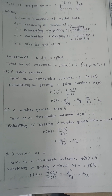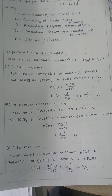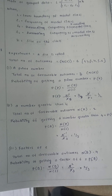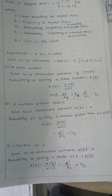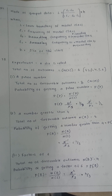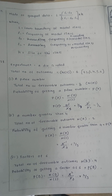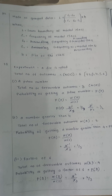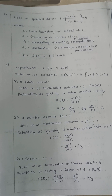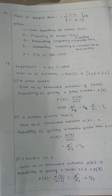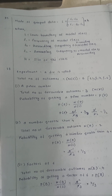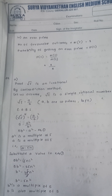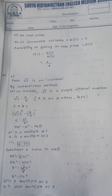Question 28: a dice is rolled. Number of outcomes is 6. Prime numbers are 2, 3, 5 — probability = 3/6. Numbers greater than 4 are 5 and 6 — probability = 2/6. Factors of 6 are 1, 2, 3, 6 — probability = 4/6. Even prime number is 2 — probability = 1/6.